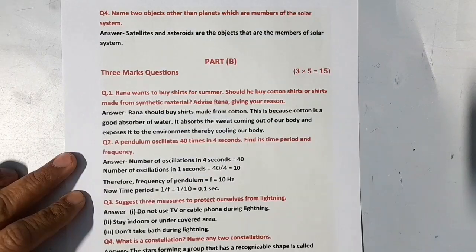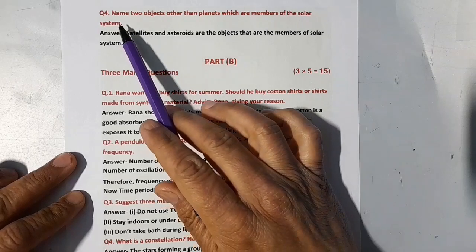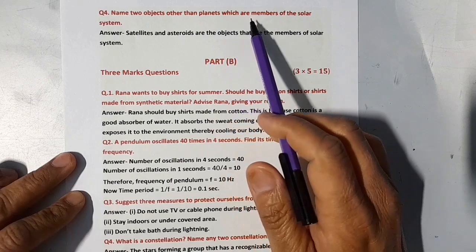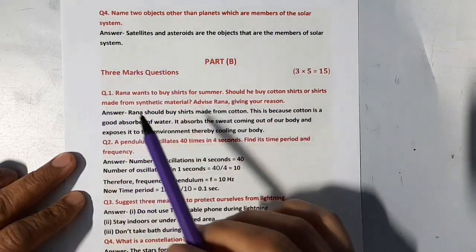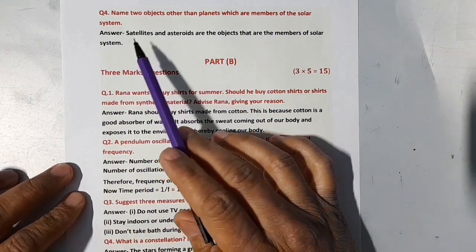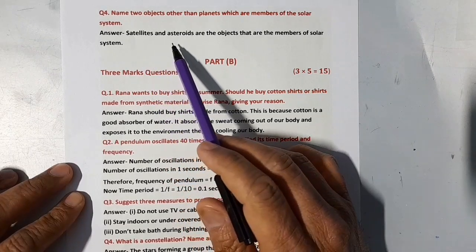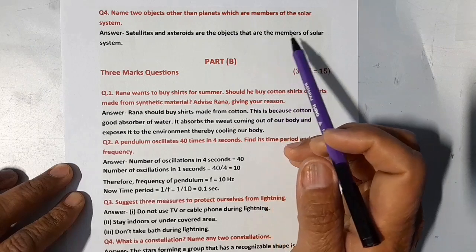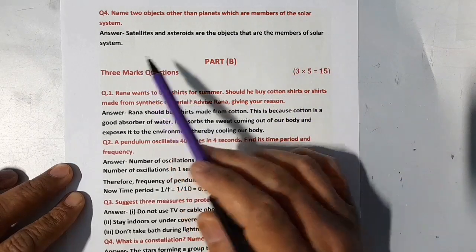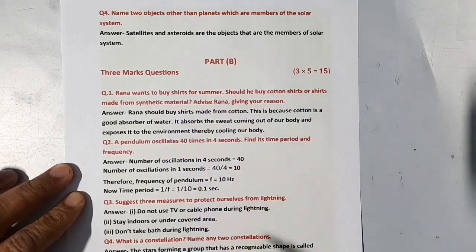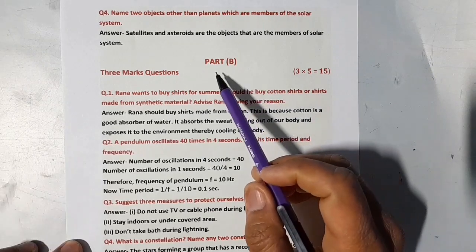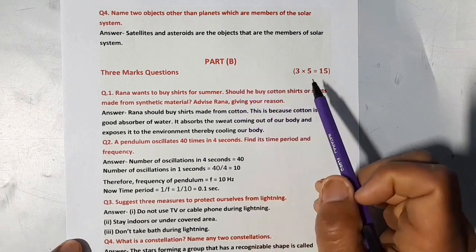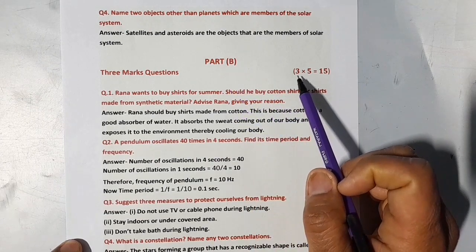Our next question is name 2 objects other than planets which are members of the solar system. Its answer is satellites and asteroids are the objects that are members of solar system other than planets. Now we come to Part B. Part B will consist of 5 questions of 3 marks each.